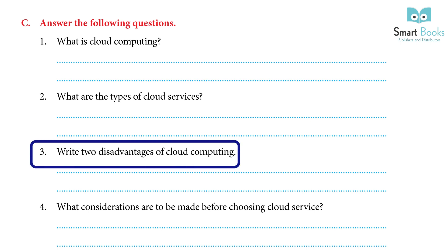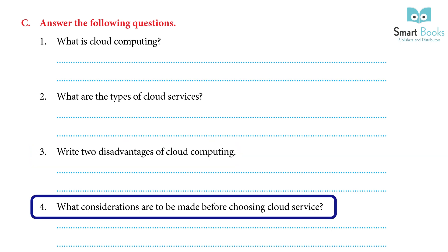3. Write two disadvantages of cloud computing: We have little to no understanding of where our data is stored, and we have limited control over who has access to our information. Our data is frequently accessed by hackers without our permission. 4. What considerations are to be made before choosing a cloud service? 1. What kind of encryption does the provider use? 2. What methods of protection do they have for the actual hardware? 3. Do they have duplicates of our data on hand? 4. Do they have a firewall set up? 5. What safeguards are in place to prevent user information from being shared with others if they have a community cloud?